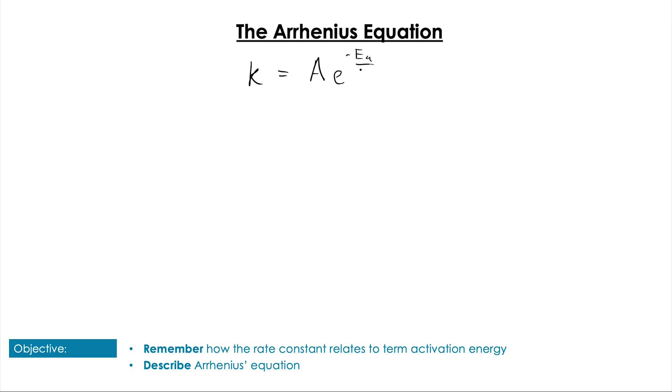That expression that we have left is the Arrhenius equation: k equals A multiplied by e to the power of minus Ea over RT. This equation is really useful. If we take natural logarithms of both sides, we end up with ln k equals ln A minus Ea over RT.